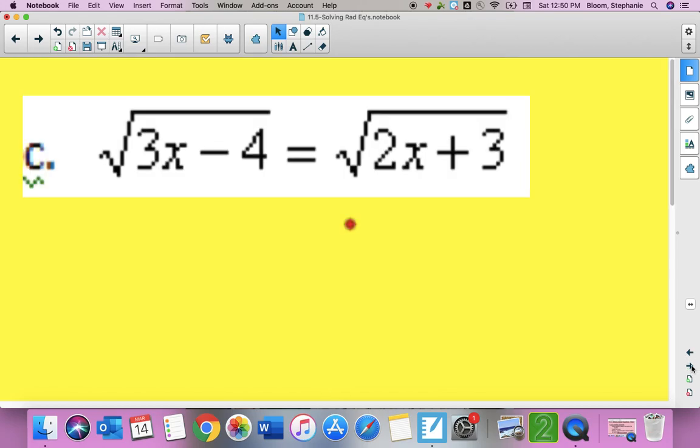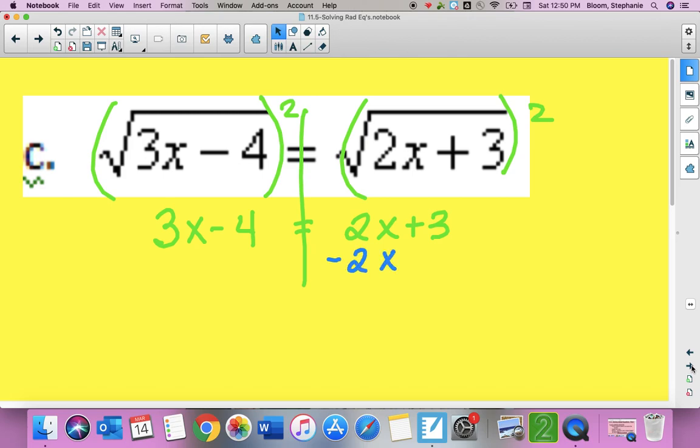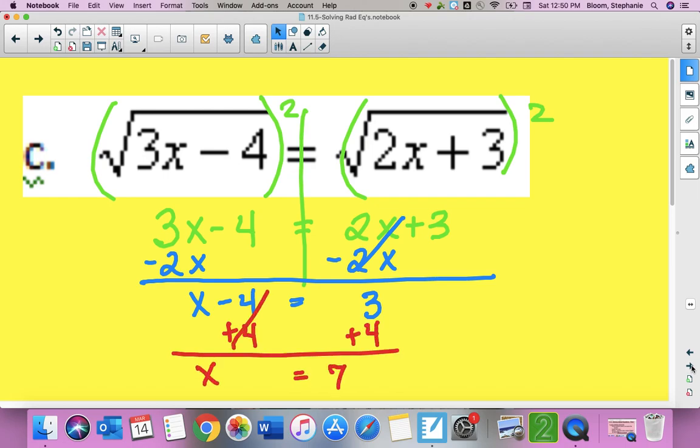Here's my next one. Once again, I have square roots on both sides of the equal sign and nothing outside. So I'm going to square both of them. And so I'm just going to bring down. It just cancels out the square root. So I have 3x minus 4 is equal to 2x plus 3. And then I'm going to get the variables on the same side. So again, I'm going to move my smallest. I'm going to subtract 2x on both sides. So 1x minus 4 is equal to 3. And then I'm going to add 4 to both sides.